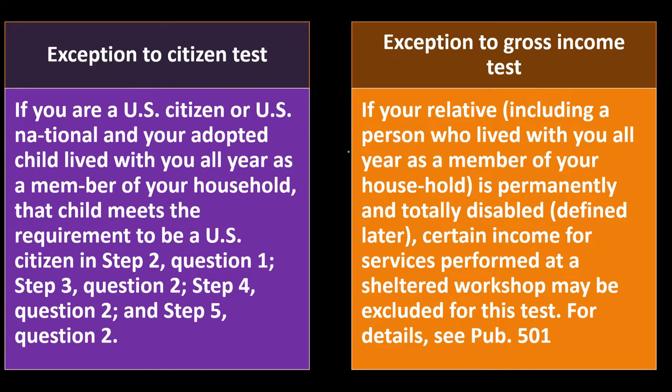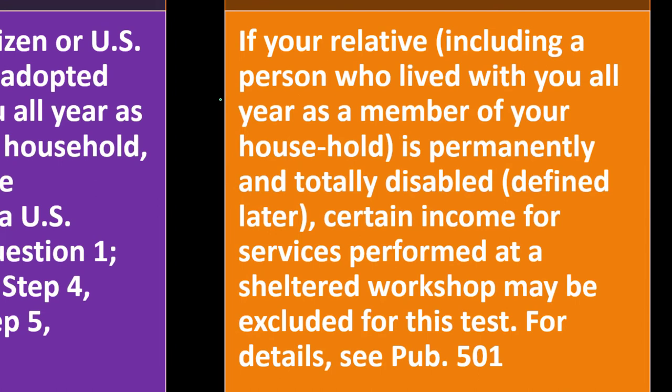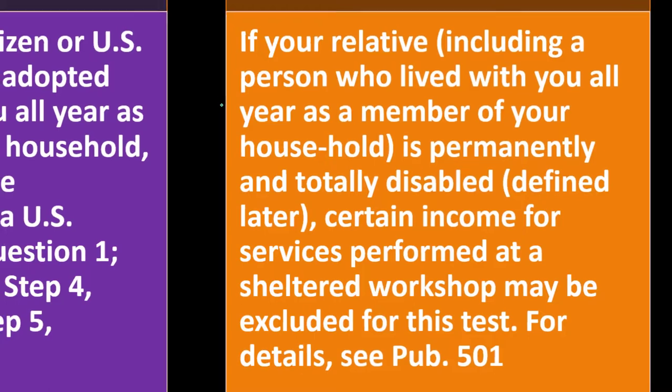Exception to the gross income test: there's always going to be exceptions into the gray area regarding what's the exception to the rule. If your relative — including a person who lived with you all year as a member of your household — is permanently and totally disabled, certain income from services performed at a sheltered workshop may be excluded for this test. For details, see publication 501 if that's applicable to you.